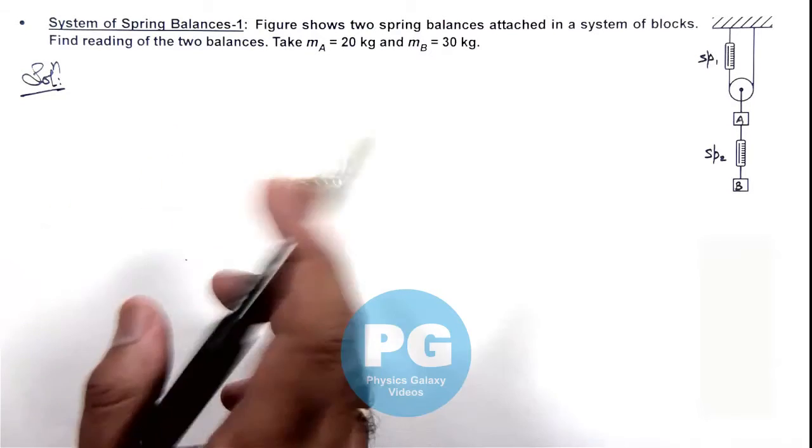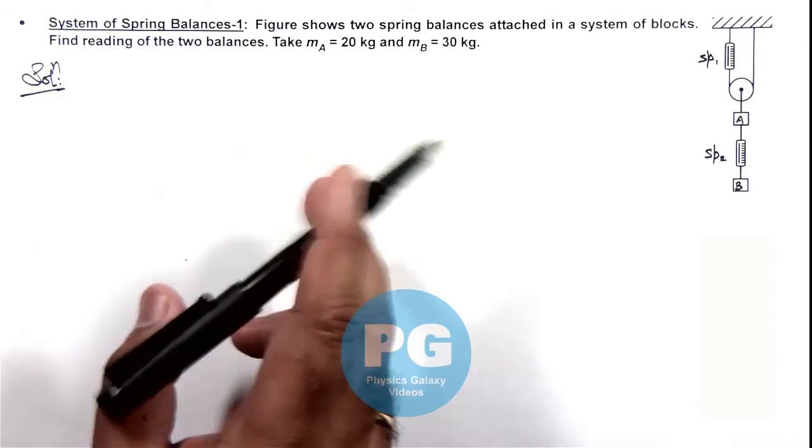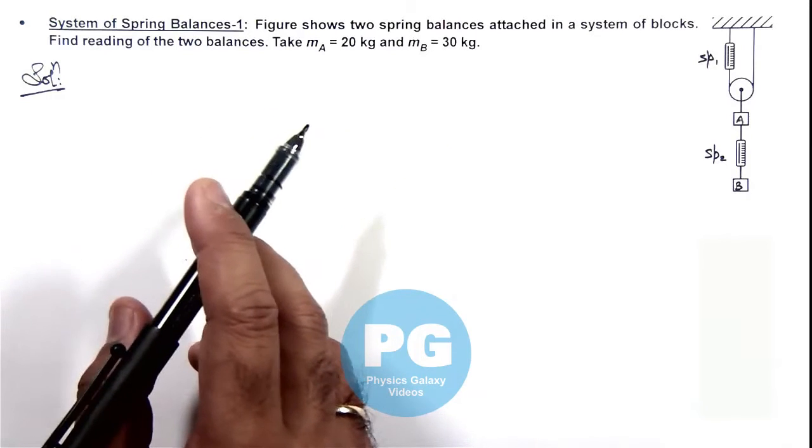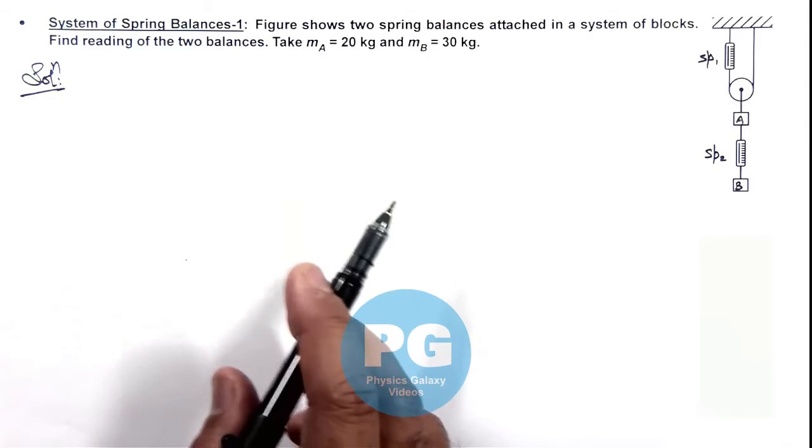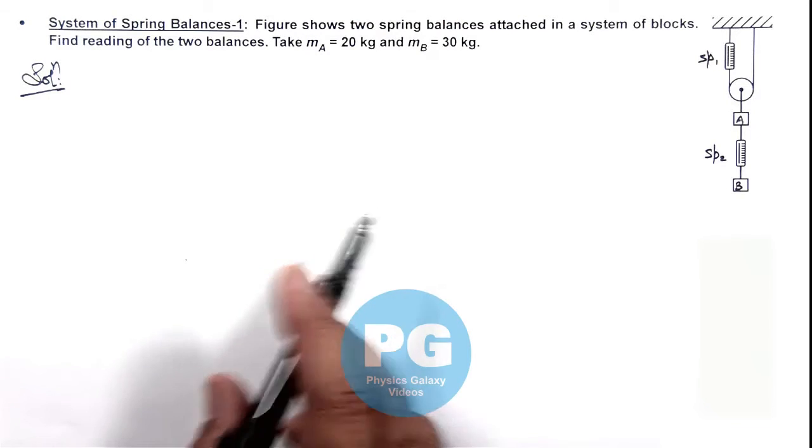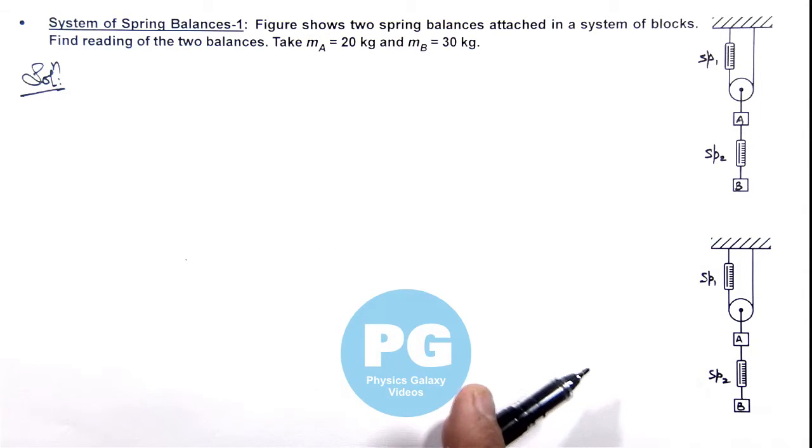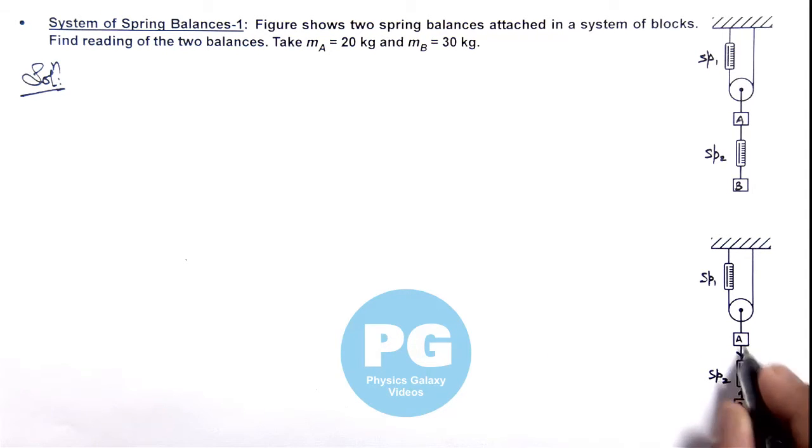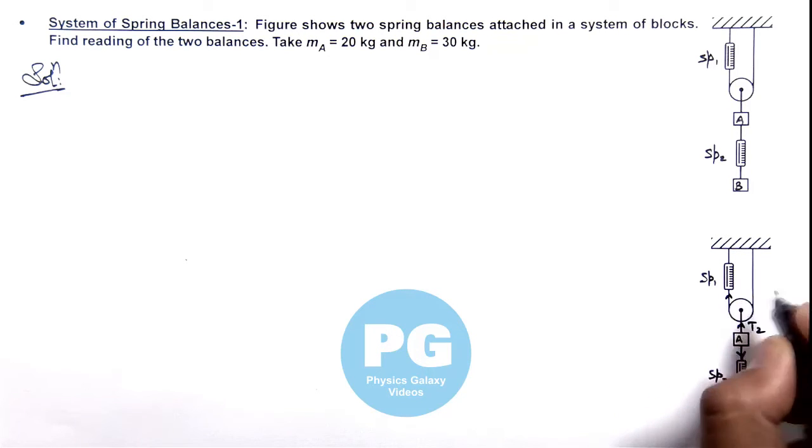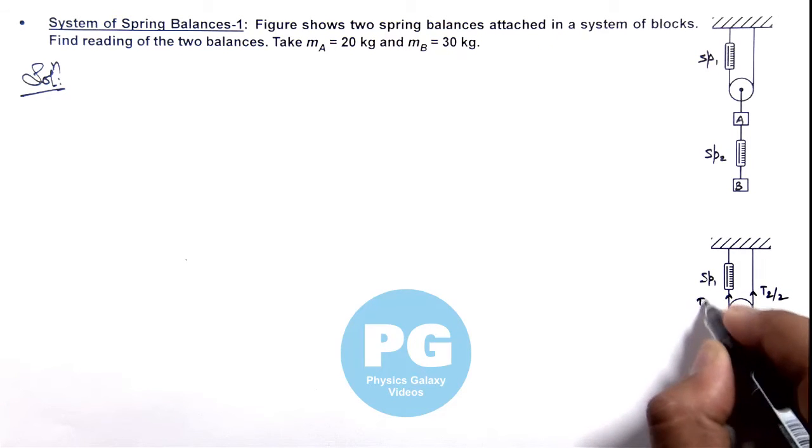We need to calculate the tension in the strings because we know spring balances always read the tension in string in kilogram force. So let's have a look on this figure where we analyze the tension. We consider ideal spring balances, so tension in one string remains same. Say here tension is T1, and in this string if it is T2, then for ideal pulley string system here tension will be T2 by 2 and T2 by 2.